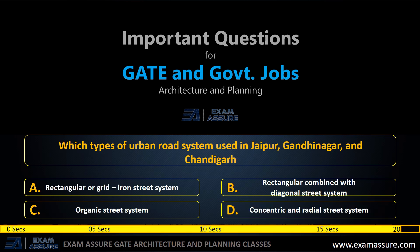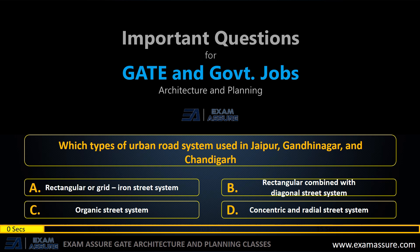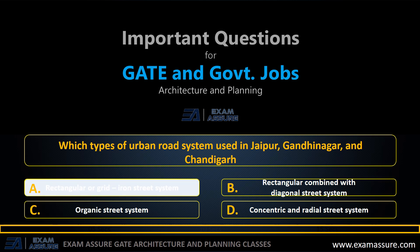Next question. Which type of urban road system is used in Jaipur, Gandhinagar, and Chandigarh? Option A: Rectangular or Gridiron system. Option B: Rectangular combined with diagonal street system. Option C: Organic street system. Option D: Concentric and radial street system. The correct answer is: Rectangular or Gridiron system.